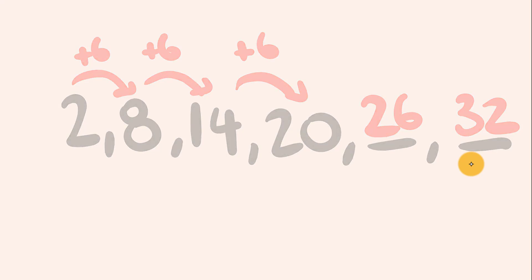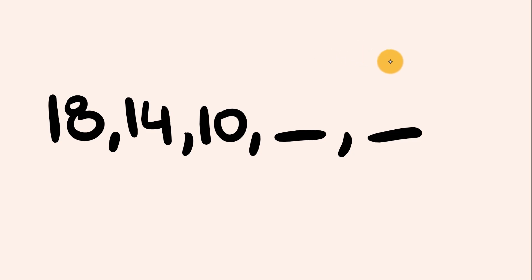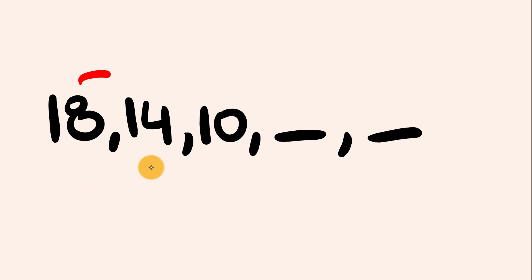What about this one? We start with 18, then we have 14, then we have 10. What are the next two numbers in this sequence? Let's work out what's happening between the numbers as we go along. As we go from 18 to 14, we're going downwards — we've gone down by 4. And from 14 to 10, we're also going down by 4.